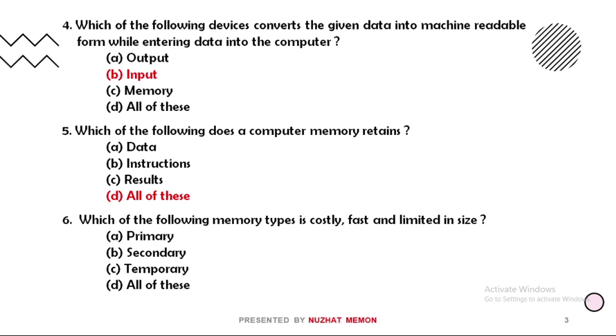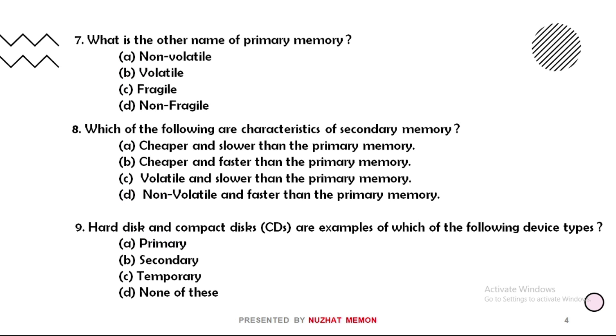Six: which of the following memory types is costly, fast, and limited in size? The correct option is option A, that is primary, and the second name for primary memory is temporary. So here option A and C both are correct. Seven: what is the other name of primary memory? The correct option is option B, that is volatile memory.